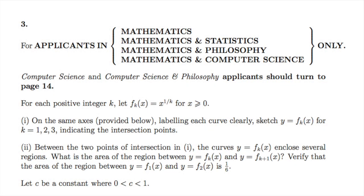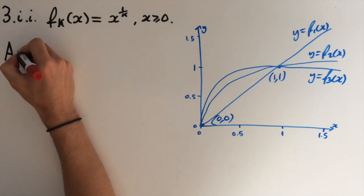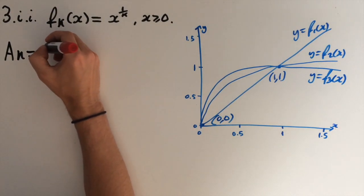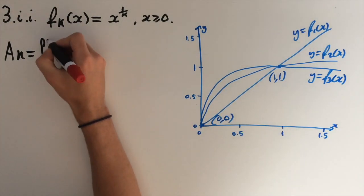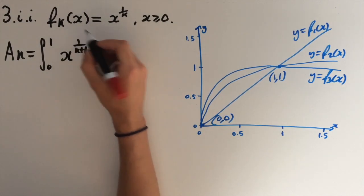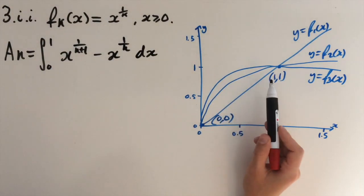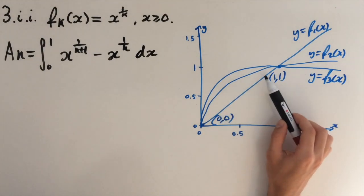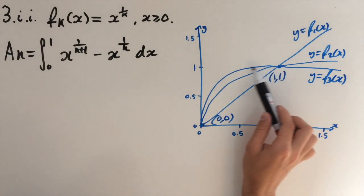For part ii, we need to find the area of the region between the functions y equals fk of x and y equals fk plus 1 of x. And then we need to verify that the area between f1 of x and f2 of x is a sixth. I'm going to let ak be the area between fk plus 1 and fk. We can represent this as an integral with limits 0 and 1, from 0 to 1 of x to the power of 1 over k plus 1 minus x to the power of 1 over k dx. Hopefully you can see it's going to get smaller as k increases.